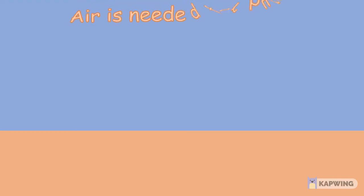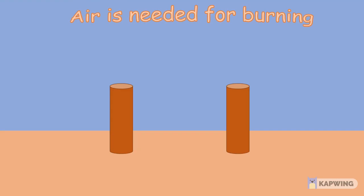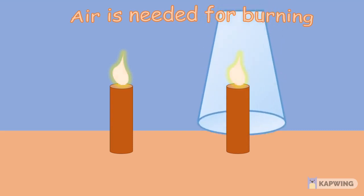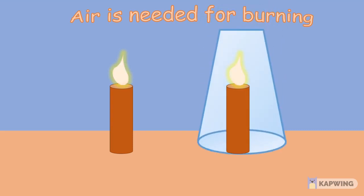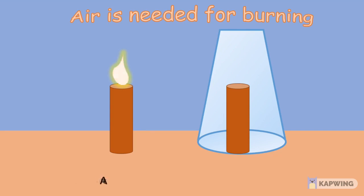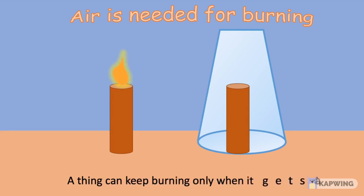Air is needed for burning. Let's take two candles and place them on a table, and let us light both the candles. Now, let us cover one of the candles with a glass tumbler. Do you know what will happen now, kids? After some time, the candle covered by the tumbler goes off. Because the candle covered with the tumbler could not get air to burn. So, with this example, we can understand that a thing can keep burning only when it gets air.